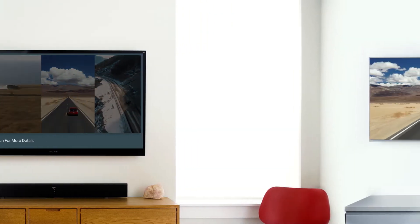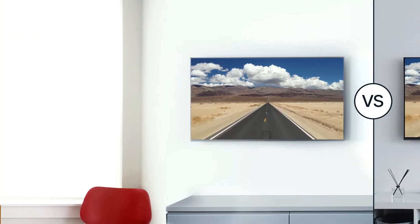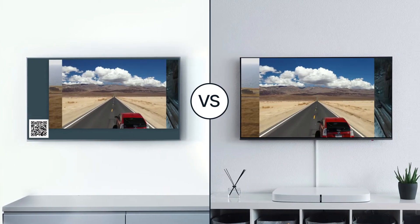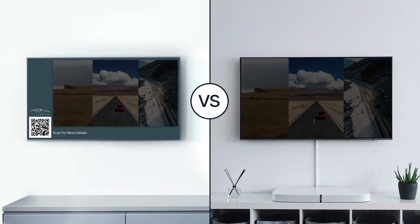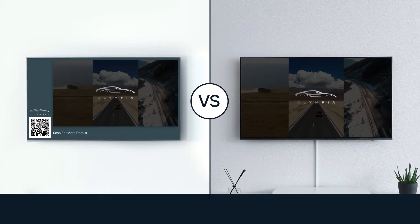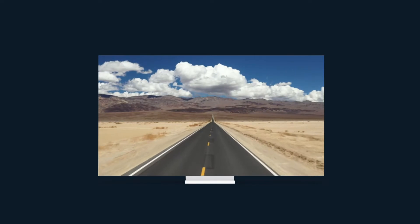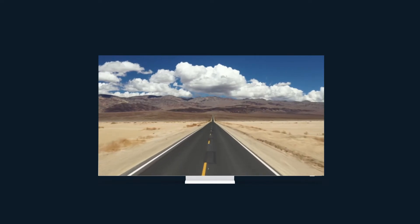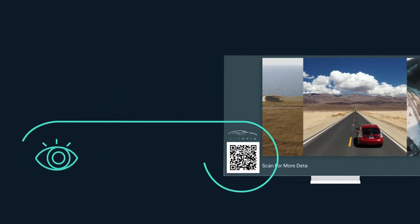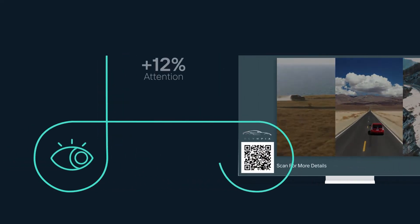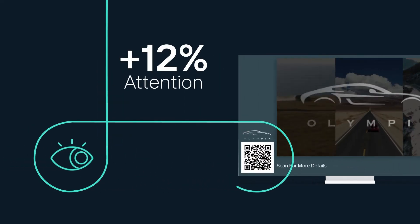ShareThru tested CTV commercials with and without Dynamic QR Codes on real consumers. The result? Ads using ShareThru CTV Dynamic QR Codes generated a 12% increase in attention.